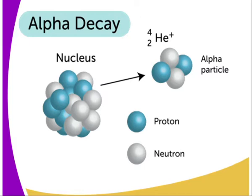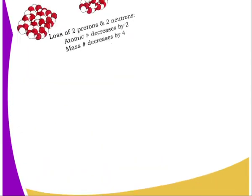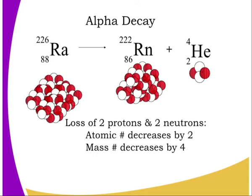Alpha decay occurs when the nucleus emits an alpha particle, and therefore the number of protons and neutrons will change. The alpha particle has mass number four and atomic number two. For example, radium with atomic number 88 and mass number 226 undergoes alpha decay by emitting an alpha particle, causing it to lose two protons and two neutrons — hence the atomic number decreases by two and the mass number decreases by four to give a new nuclide.